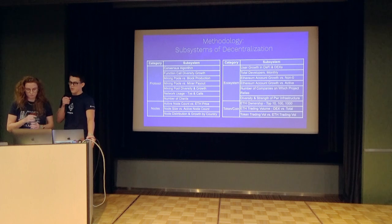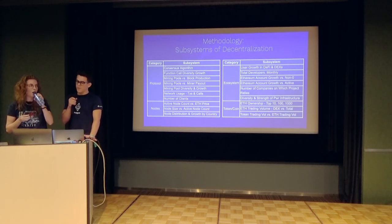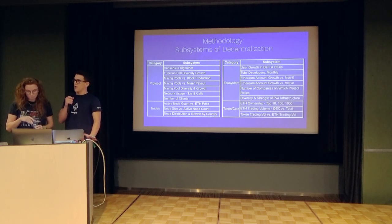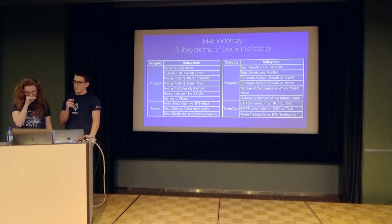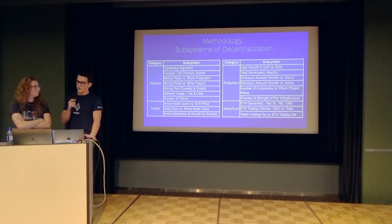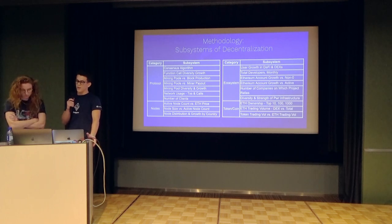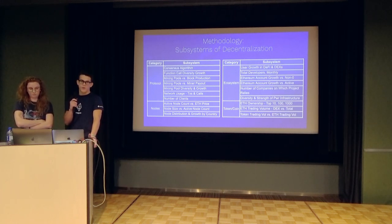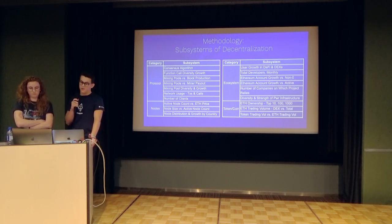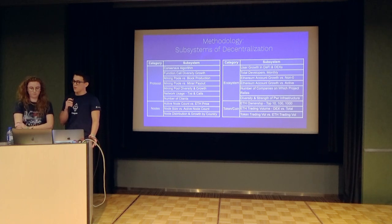Our approach to measuring Ethereum's decentralization over time began with determining which elements of Ethereum's architecture, both on and off-chain, most significantly impact decentralization. At this stage in the research, we identified 19 key subsystems spread across four different categories to investigate. We attempted to anchor our conclusions in as much on-chain and objective data as possible, which can get tricky. There are data points we have not covered that we consider important, but not necessarily on-chain, and they can be very difficult to quantify.